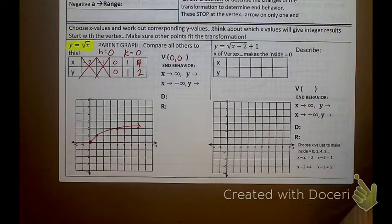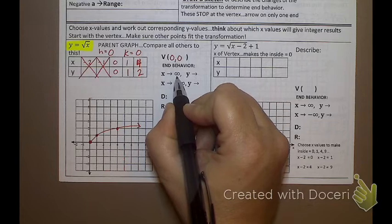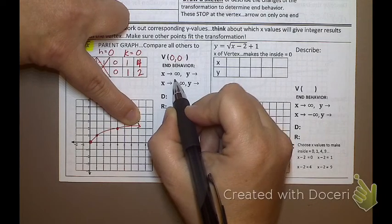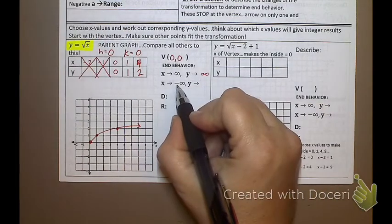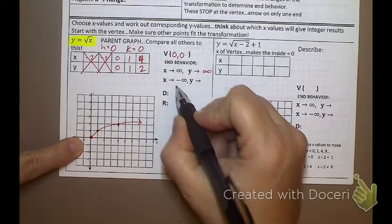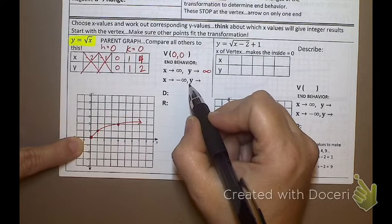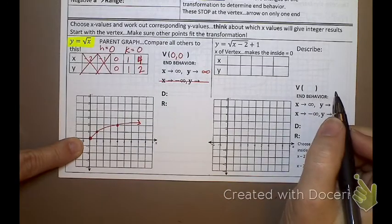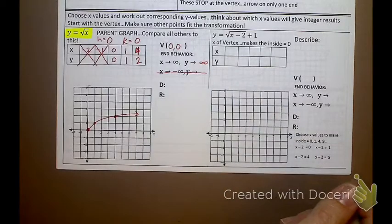If I were to talk end behavior — x arrow infinity, what side of the graph is that talking about? The right side. What's happening on the right side? It's going up, slowly, but it's going up. So I would put positive infinity. What about the left side of my graph? There is a left side, but I can see where it ends — there's no arrow. I can see the distinct end, so we would not talk about end behavior for the left side. We only talk about end behavior when it's an arrow and we can't actually see the end.